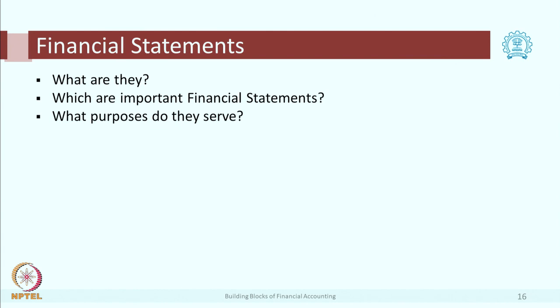Now we will move to the next level. In financial accounting, as we have seen, the final target is preparation of financial statements. Let us look at what we mean by financial statements, which are the important financial statements, and what purposes these statements serve. The first — I think many of you might have heard about them — there is a balance sheet, there is a profit and loss account, there is a cash flow statement, and there are more statements which are considered as financial statements.